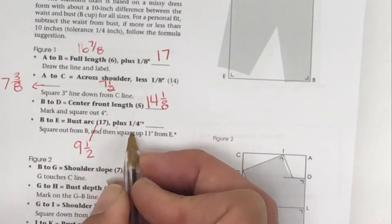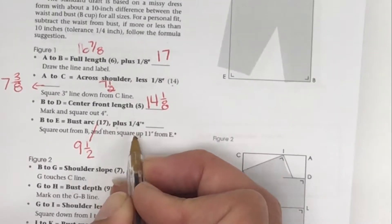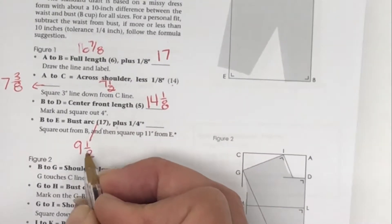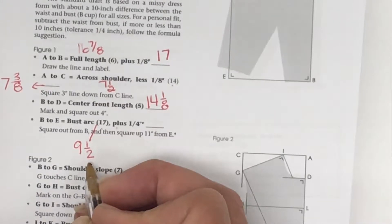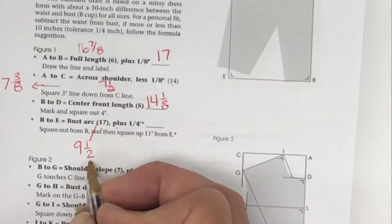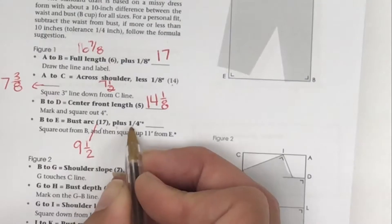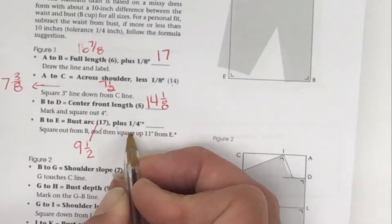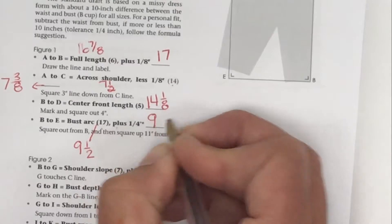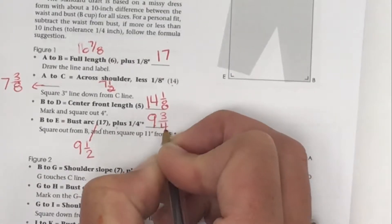1/4 is the same as—oh sorry, no, sorry. 1/2 is the same as 2/4, so 2/4 plus 1/4 equals 3/4. We'll have 9 and 3/4. Probably the hardest part of this is all the fraction math.